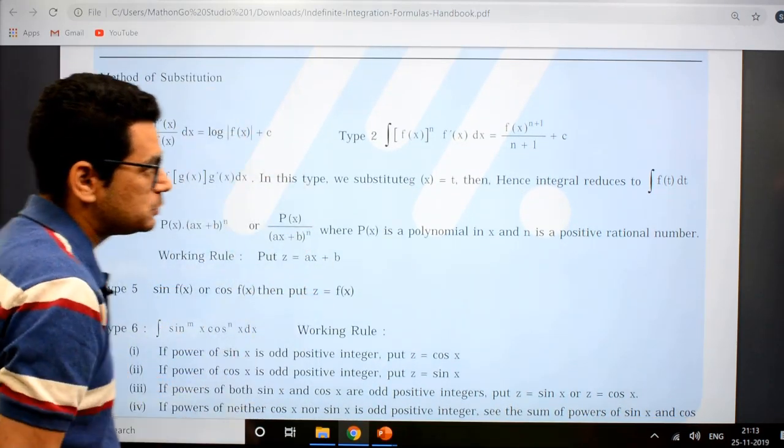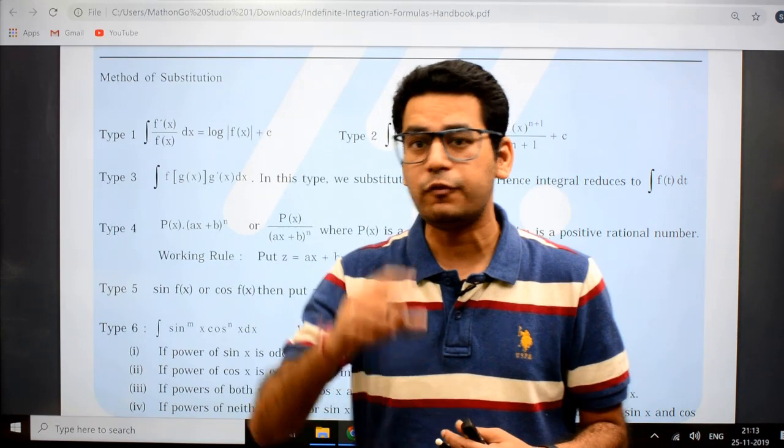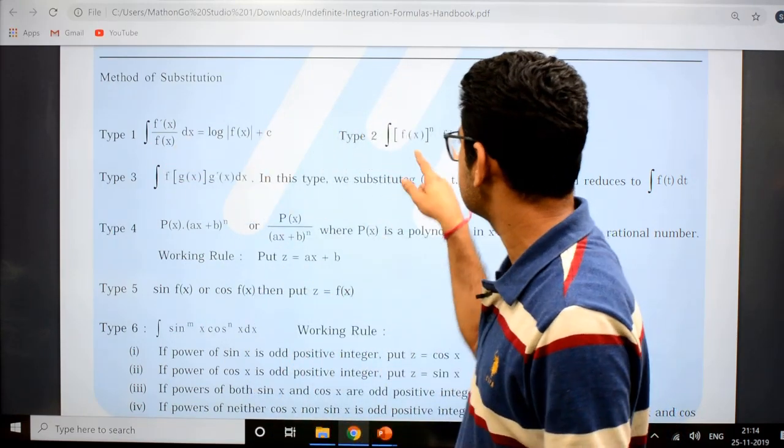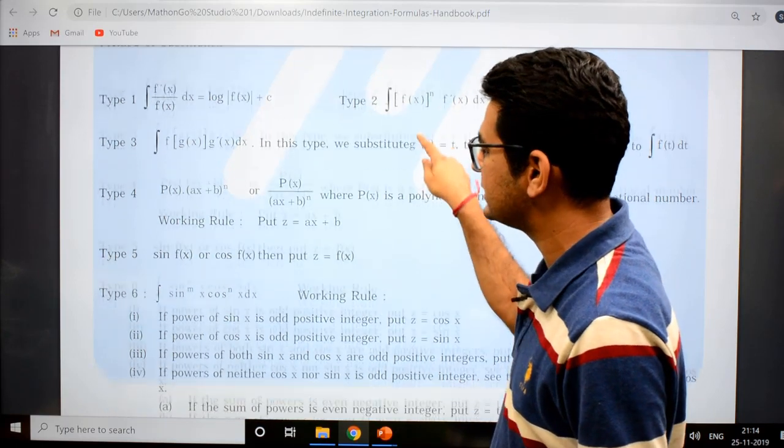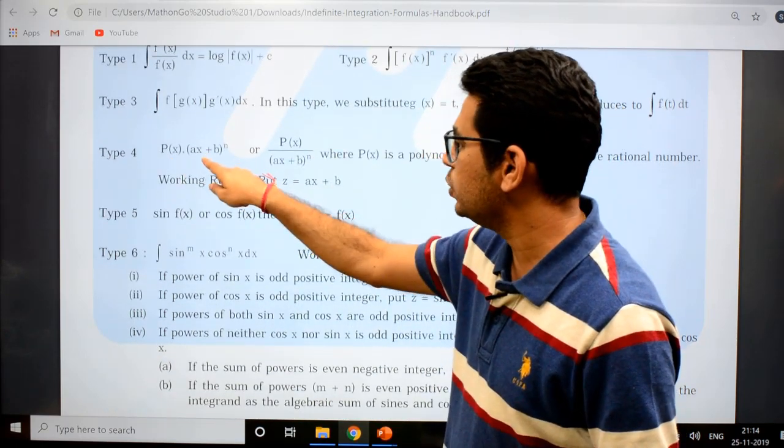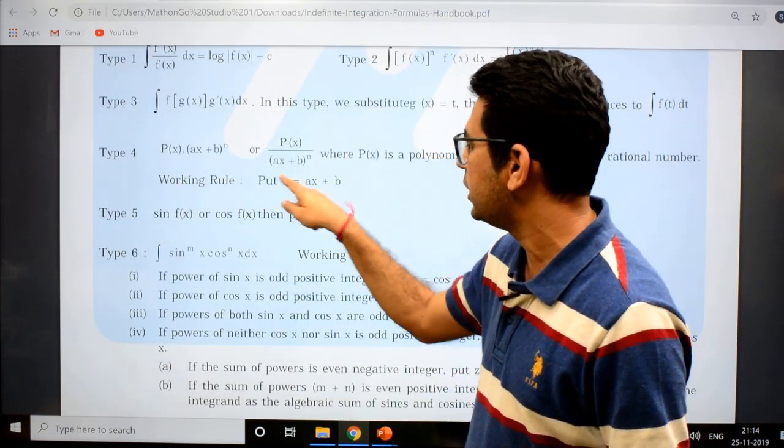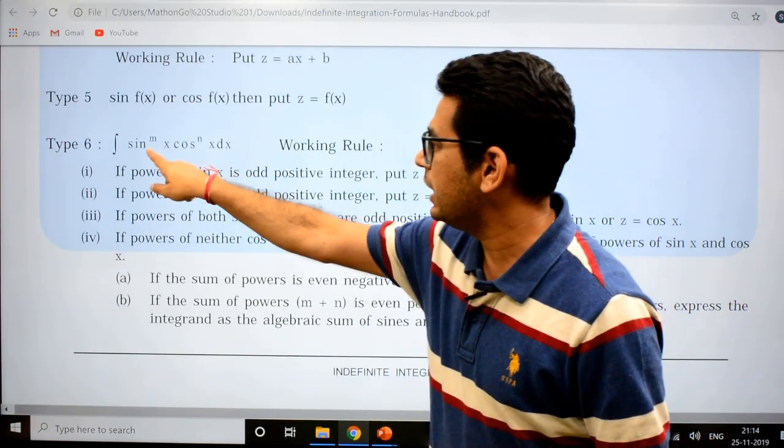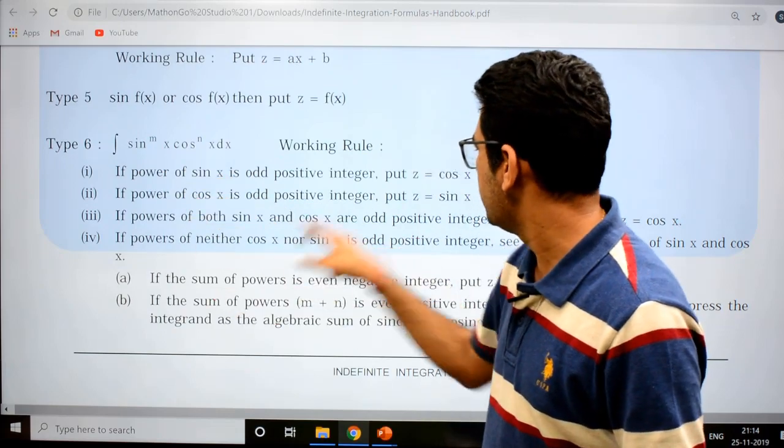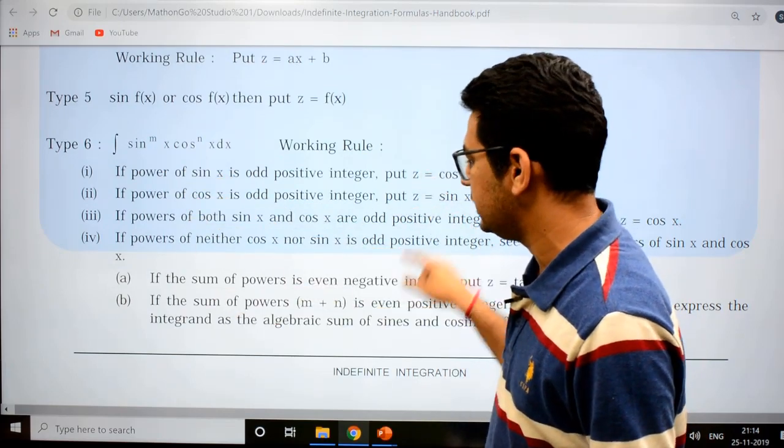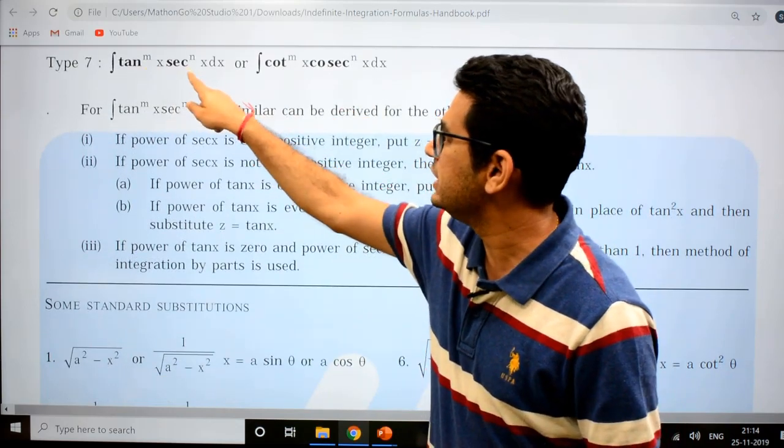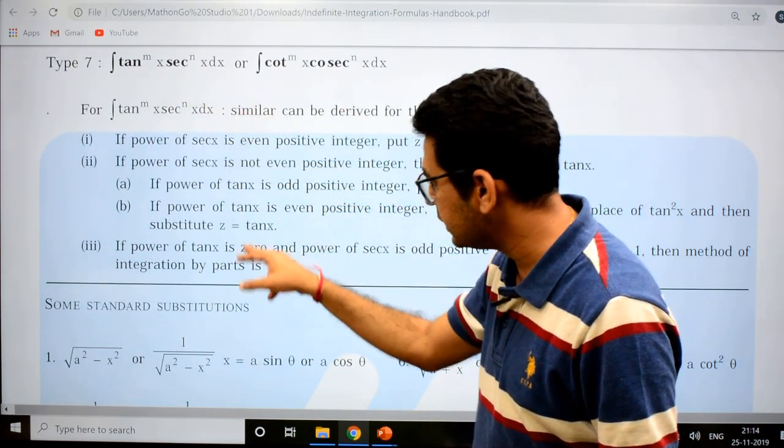Then method of substitution. In the method of substitution there are many formulas which we generally don't write in formula sheets. You'll find f'(x)/f(x), f(x) raised to power n times f'(x), then px times (ax+b) raised to power n or divided by n where px is a polynomial. You have to put z equal to ax plus b. sin^m cos^n, tan^m sec^n, and the rest of formulas.